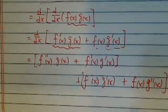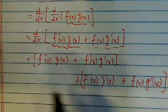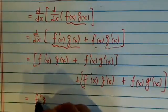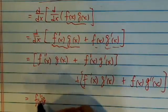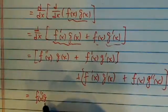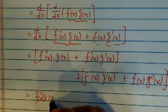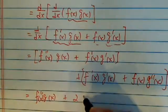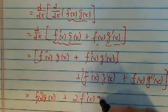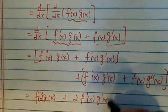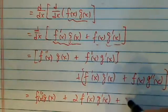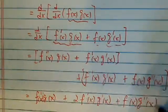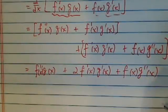So this one is the second term. Now let's combine them. The result is: the second derivative of the first function times the second function, plus twice the product of the first derivatives, plus the first function times the second derivative of the second function.